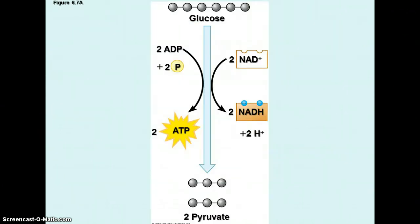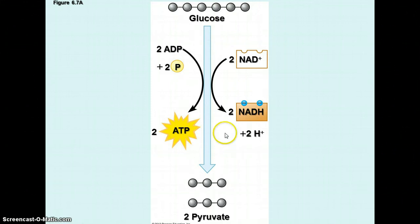This diagram from your book shows the six-carbon molecule producing 2 ATPs of energy, 2 NADHs, and 2 molecules of pyruvate.